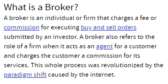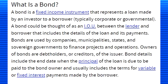Let's move on to bonds. What are bonds? A bond is a fixed income instrument that represents a loan made by an investor to a borrower, typically corporate or governmental. A bond could be thought of as an IOU between the lender and borrower that includes the details of the loan and its payments.